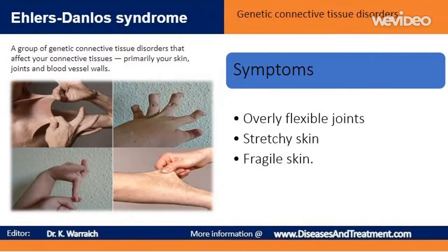Each type of Ehlers-Danlos syndrome has its own symptoms. Signs and symptoms of the most common form include overly flexible joints. Because the connective tissue that holds joints together is looser, your joints can move far past the normal range of motion. Joint pain and dislocations are common.